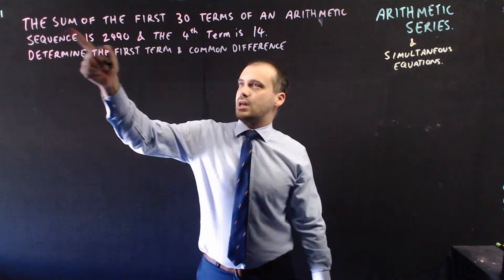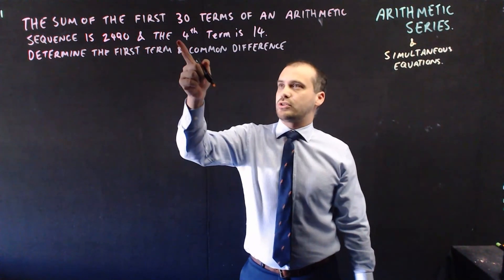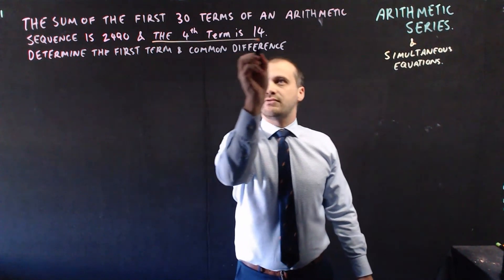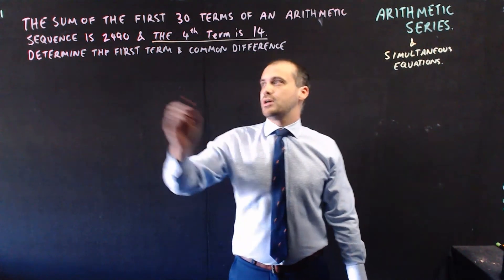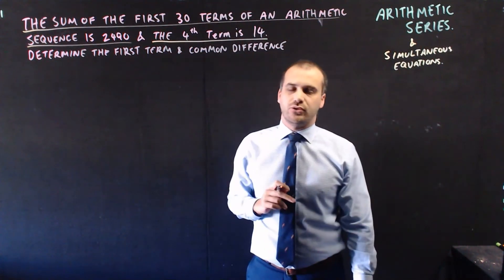So let's see what we've got. We've got the sum of the first 30 terms is this, and we've got the fourth term is this. So what I'm going to do is take this information and put it into a formula, and I'm going to take this information and put it into a separate formula.